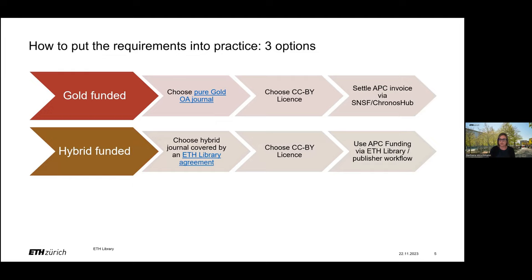The second option applies if you publish in a hybrid journal — meaning a subscription journal with an open access option — which is included in one of the open access funding agreements of ETH library. In this case, make sure you select the correct license and go through the workflow at the publisher, who recognizes you as an ETH member and directs the APC or invoice to ETH library.